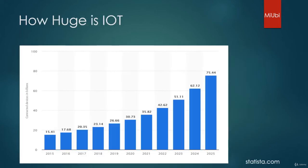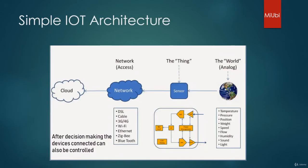A few more applications like smart home, wearables, smart city, and smart grids will also play a major role in the Internet of Things. How huge is the Internet of Things? It is estimated that around 75.44 billion devices will be connected to the internet by the year 2025, so it is very huge and we are going to see numerous devices connecting to the internet.